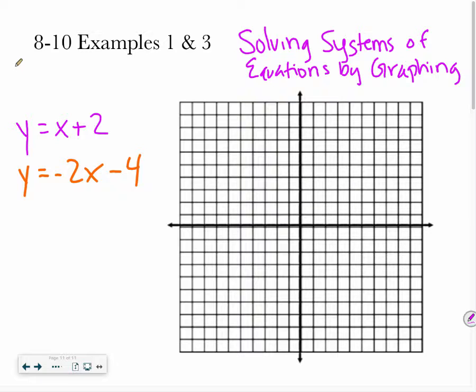So if we look at our very first problem, we have y equals x plus 2 and y equals negative 2x minus 4. The way that you solve by graphing is first you have to graph each of the lines that are listed.